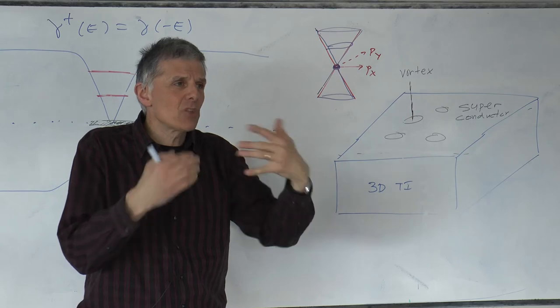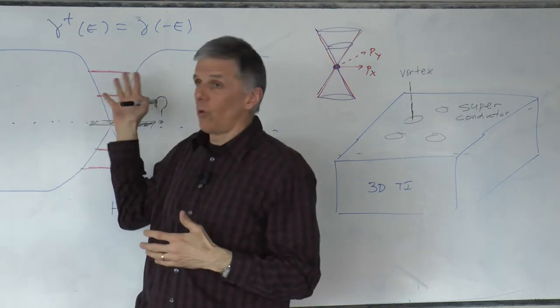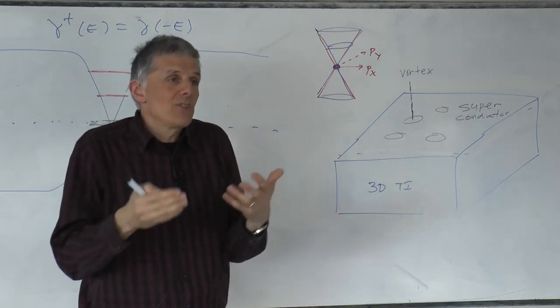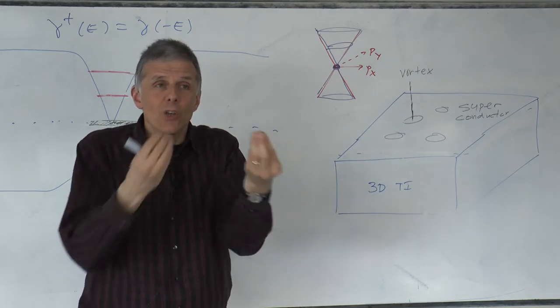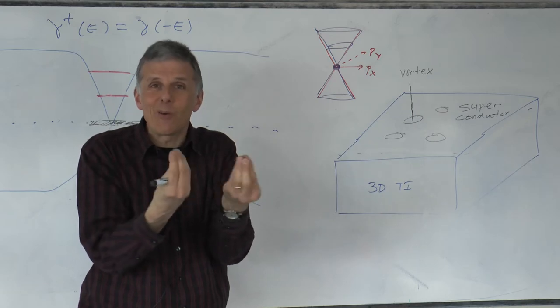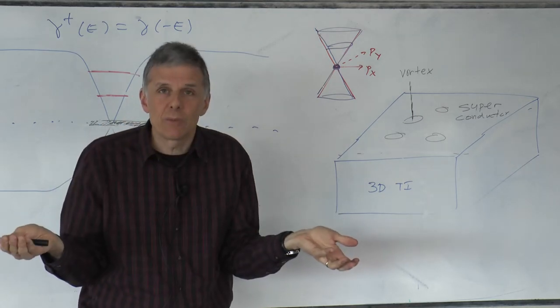Now you've encountered situations where you only had particle hole symmetry, and as you have encountered several times, one Majorana is good, two Majoranas is not good. Two Majoranas is like zero Majoranas because they will repel and they will disappear.